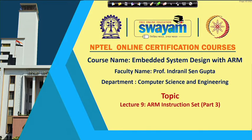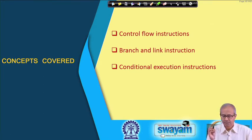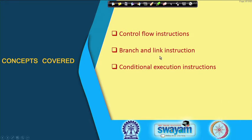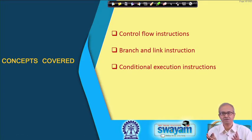We now discuss the control flow instructions available in the ARM instruction set. This is the third part of our lecture series on the ARM instruction set. Here we shall be talking about the control flow instructions, in particular the branch and link instruction, which are primarily used for handling subroutine calls, and the conditional execution instructions, which also belong to this category of control flow.